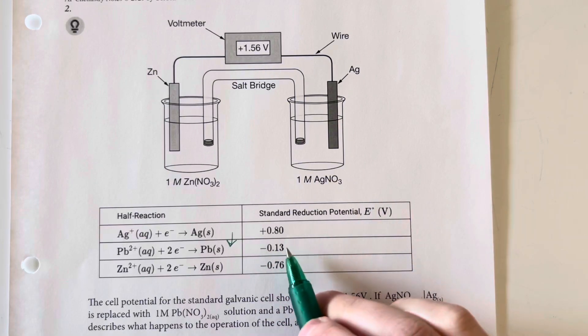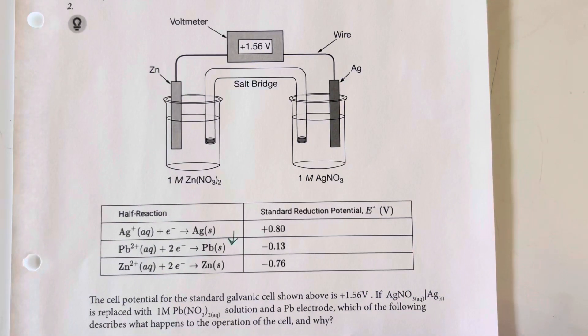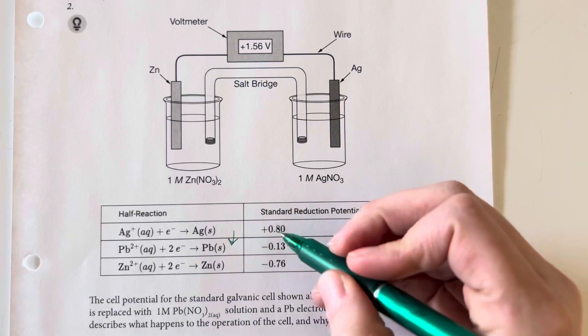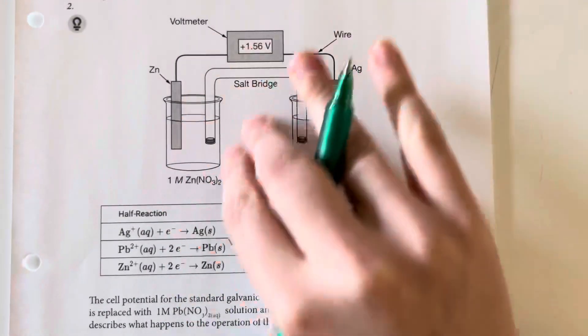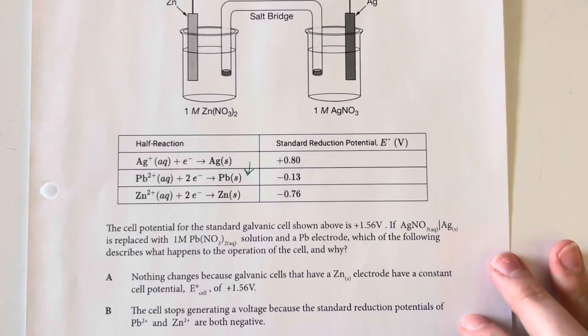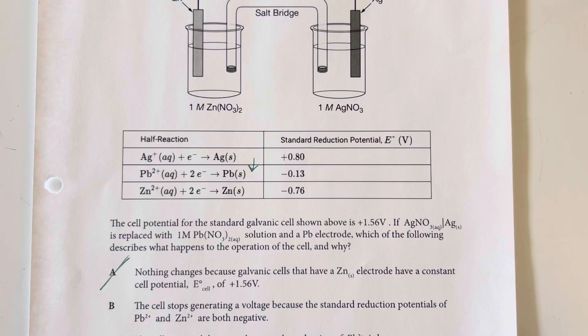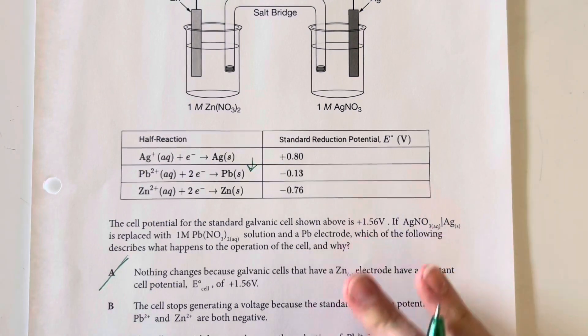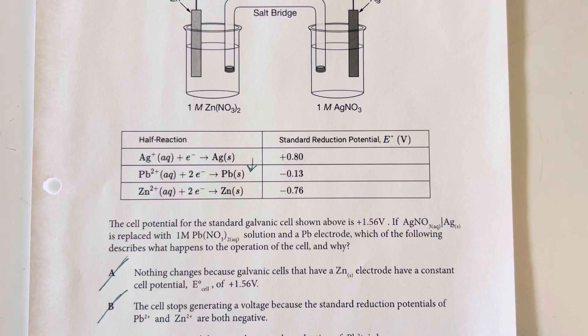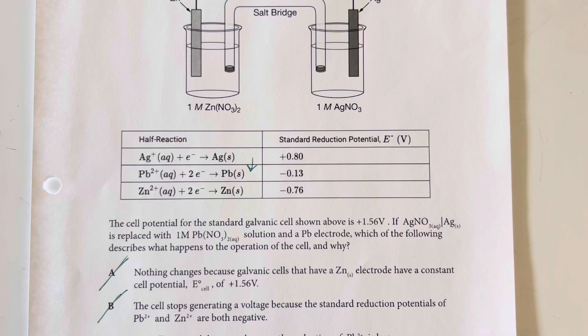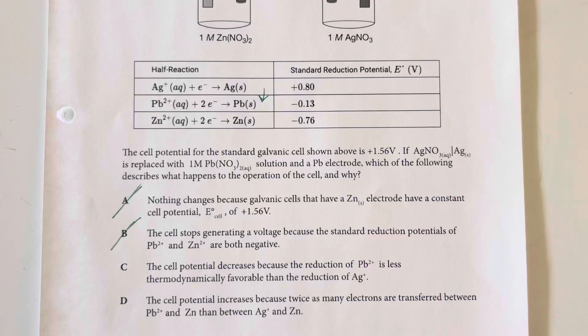Our overall E° is going to change. The cell potential will decrease because we went from having a positive E° to a negative E°. The zinc stays the same though, so I can eliminate the 'nothing changes' option. The reaction won't stop—it still goes forward, just not at as high a voltage because we have a different standard reduction potential.